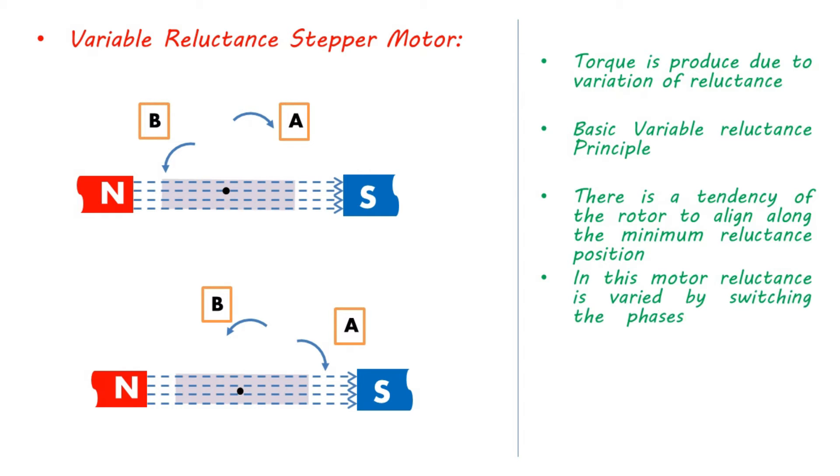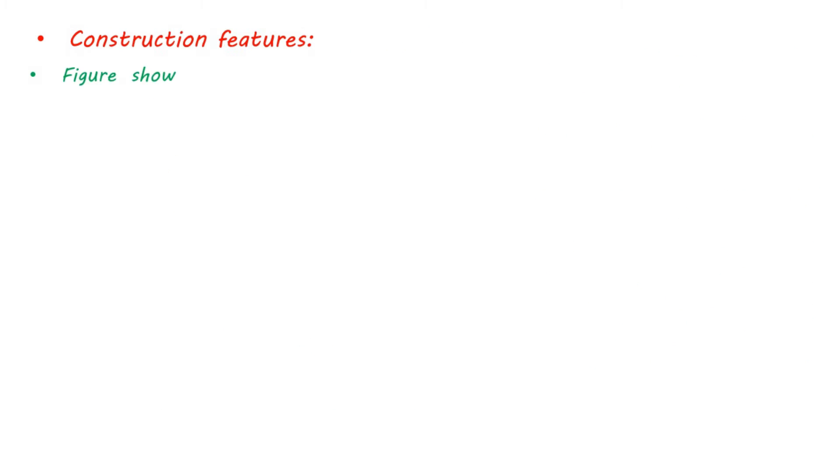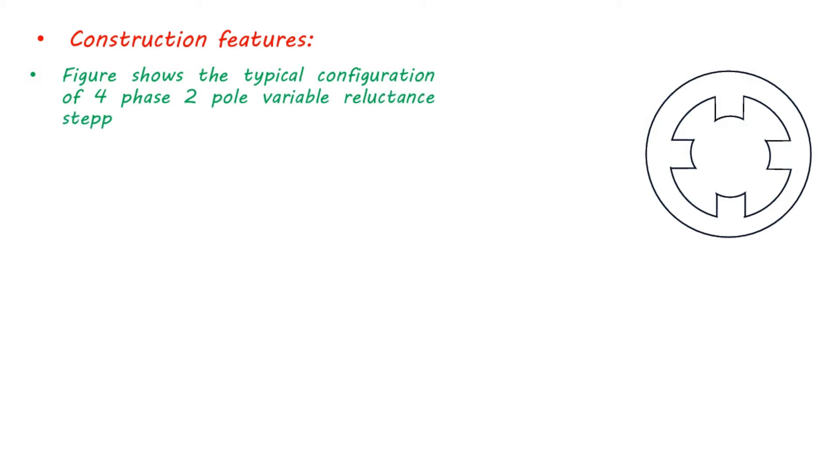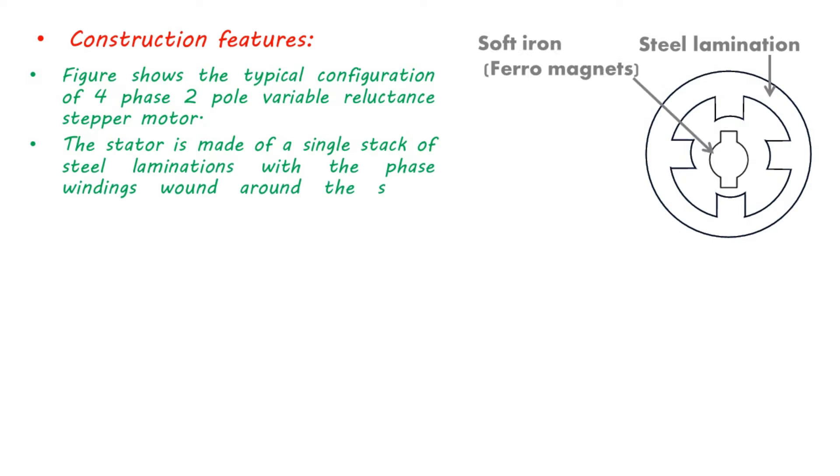Figure shows the typical configuration of four-phase, two-pole variable reluctance stepper motor. The stator is made of a single stack of steel laminations with the phase windings wound around the stator poles. The two-pole rotor has a salient structure. It is made of a stack of steel laminations without any windings.